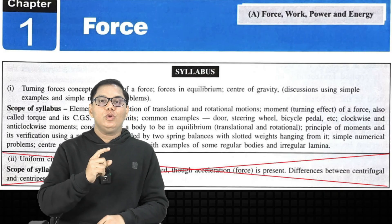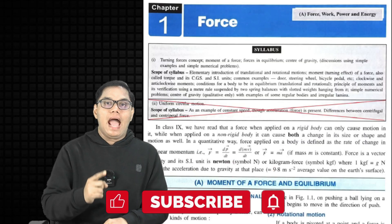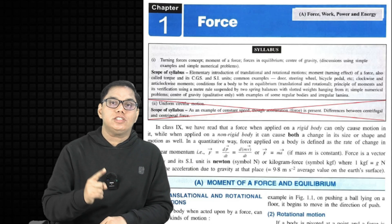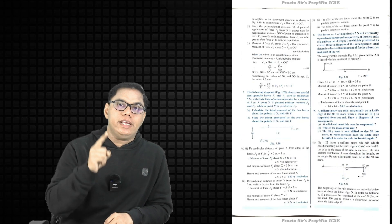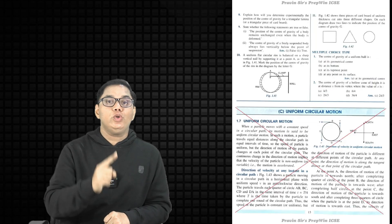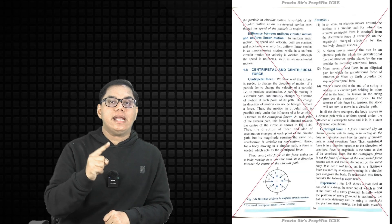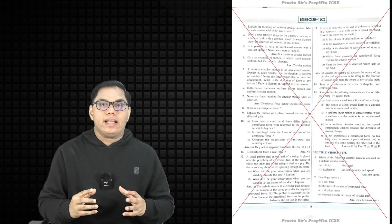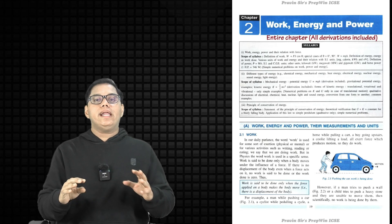Coming to Chapter 1, this chapter is divided into two units. As per the revised syllabus, there is no change in Unit 1, but Unit 2 is totally omitted. Page numbers 1 to 14 remain as they are with no change, but pages 15 to 18 are omitted. On page 15 you will see section 1.7 Uniform Circular Motion — that part is omitted. Also, 1.8 Centripetal Force and Centrifugal Force is omitted, along with the entire Exercise 1C.